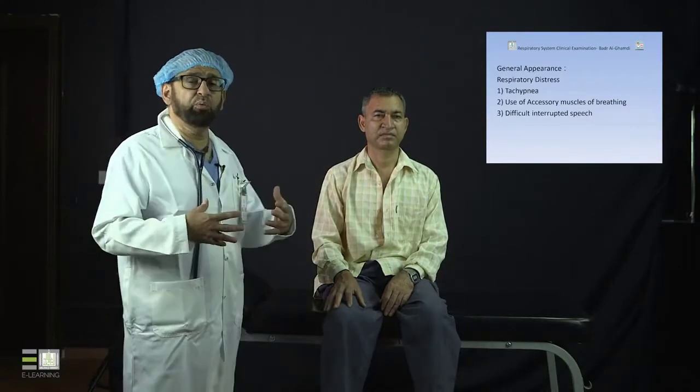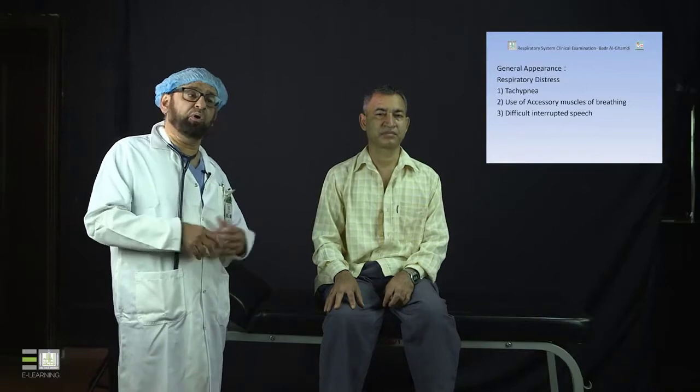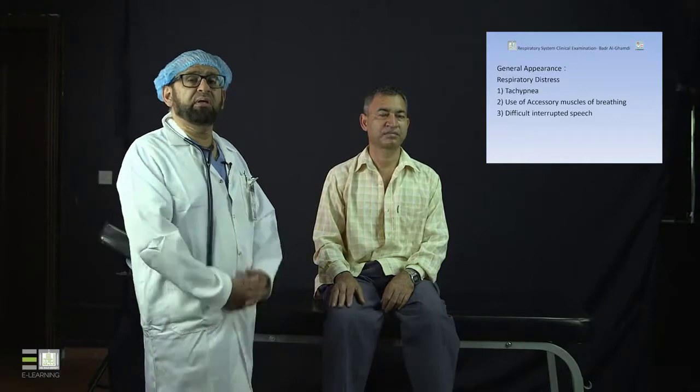With tachypnea, the patient will have frequent and heavy breathing. You don't have to count the respiratory rate at this stage — just look whether the patient is breathing heavily and frequently. If so, it means the patient is tachypneic. The respiratory rate will come later when we speak about vital signs, but in general appearance, look for fast, heavy breathing.